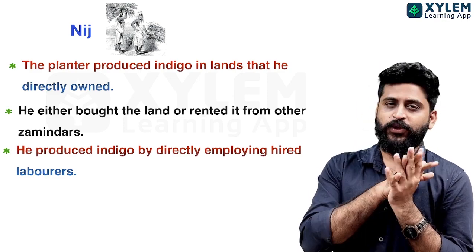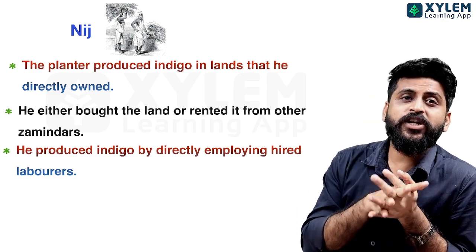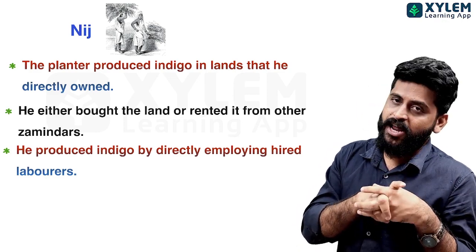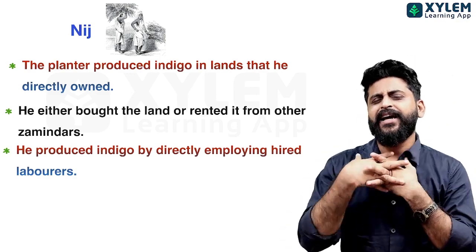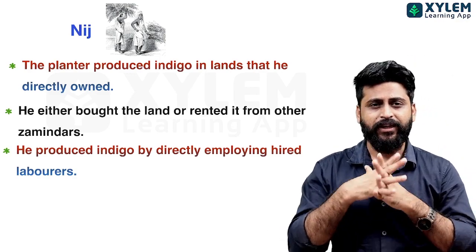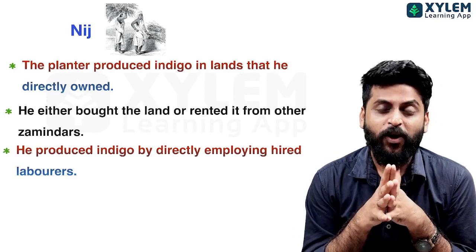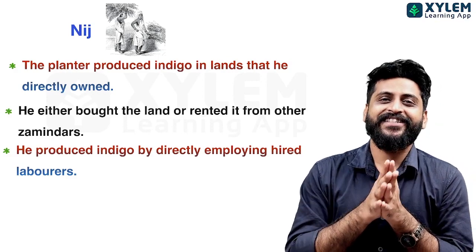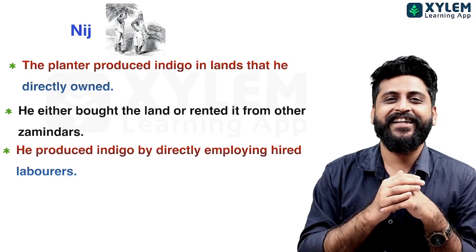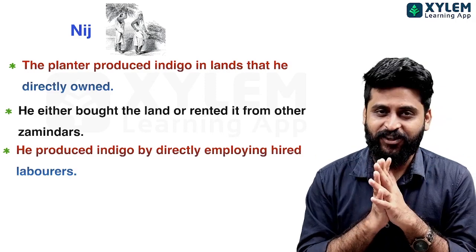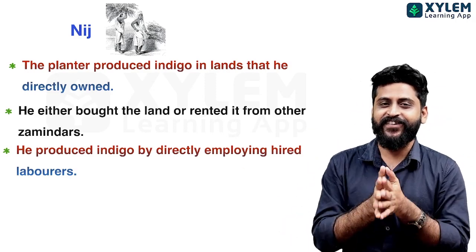Then he produced Indigo by directly employing hired labourers. This is the second feature of Nij Cultivation, and the third feature of Nij Cultivation follows from this.